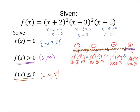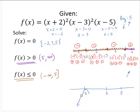If you wanted to solve this graphically, you would sketch the function. It has x-intercepts at negative 2, 3, and 5. This is a degree 5 polynomial, and since the lead coefficient is positive, the end behavior is down-up. Since we have x plus 2 squared, negative 2 is a zero of multiplicity 2, so the graph bounces off there rather than passing through.